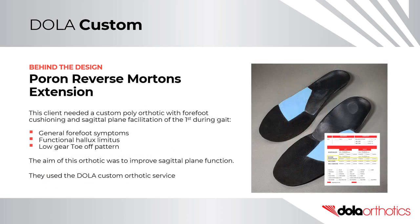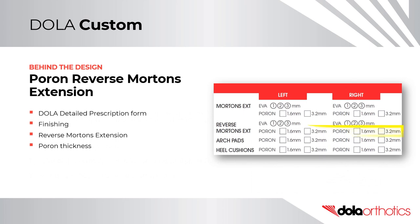Behind the Design – Poron Reverse Morton's Extension. This client needed a custom poly orthotic with forefoot cushioning and sagittal plane facilitation of the first during gait. They had general forefoot symptoms including a functional hallux limitus and low gear toe-off pattern. The aim was to improve sagittal plane function. They used the Dollar Custom Orthotic Service and selected the Poron thickness in the reverse Morton's extension section of the finishing section of the prescription form.